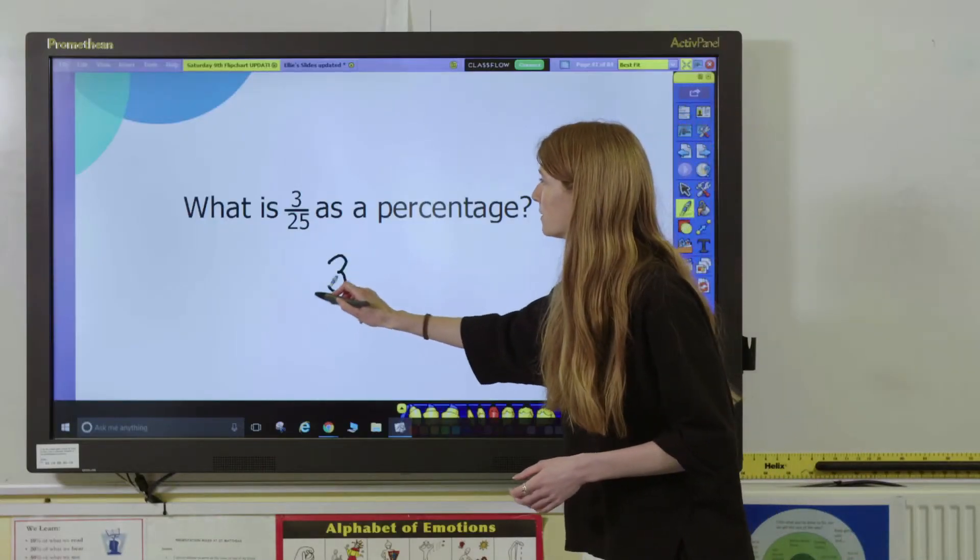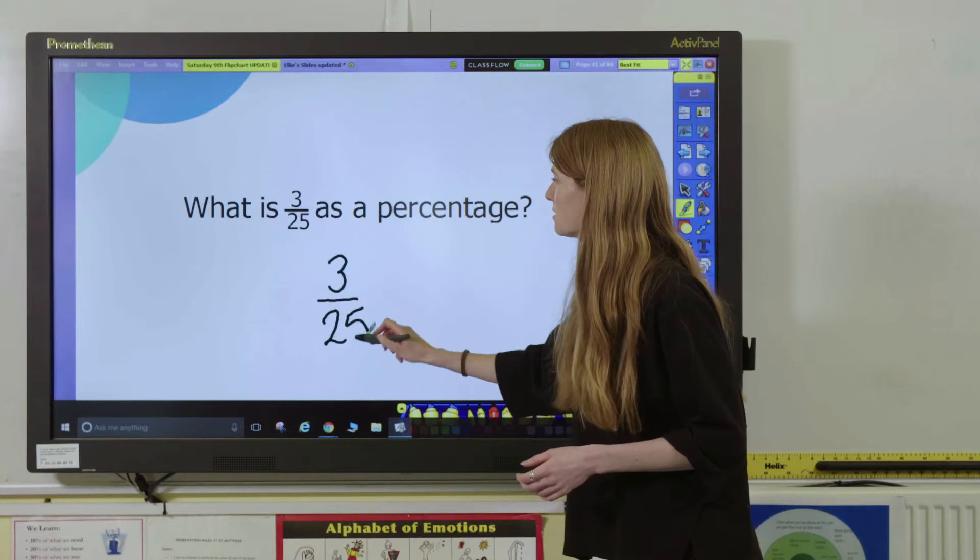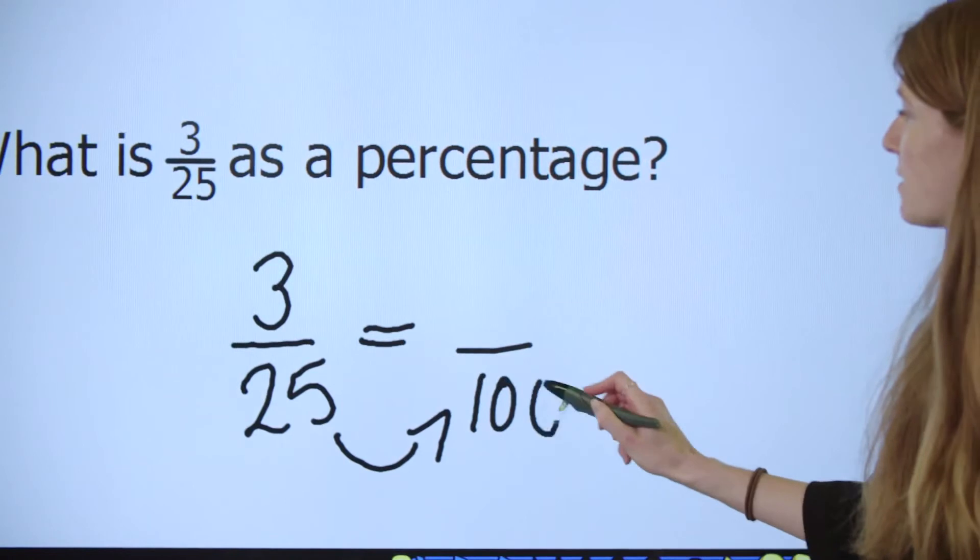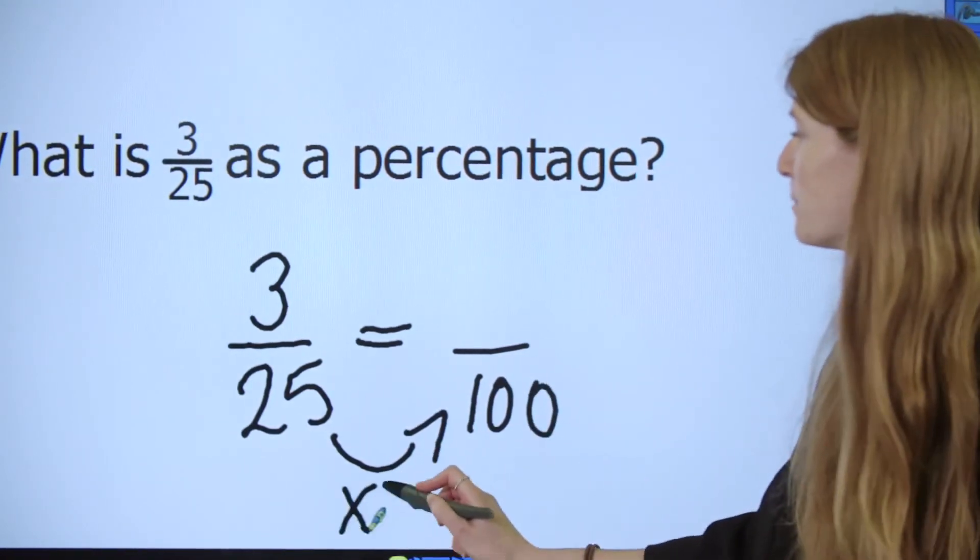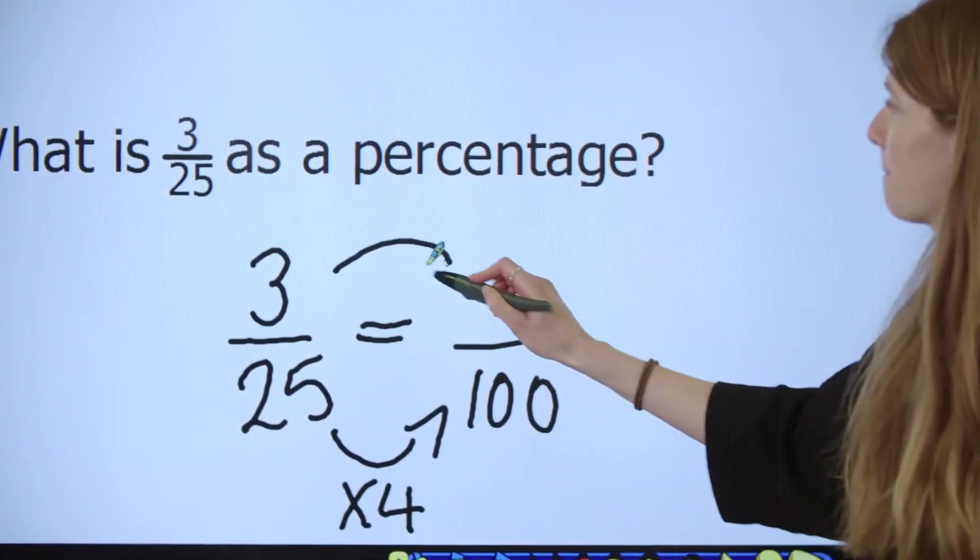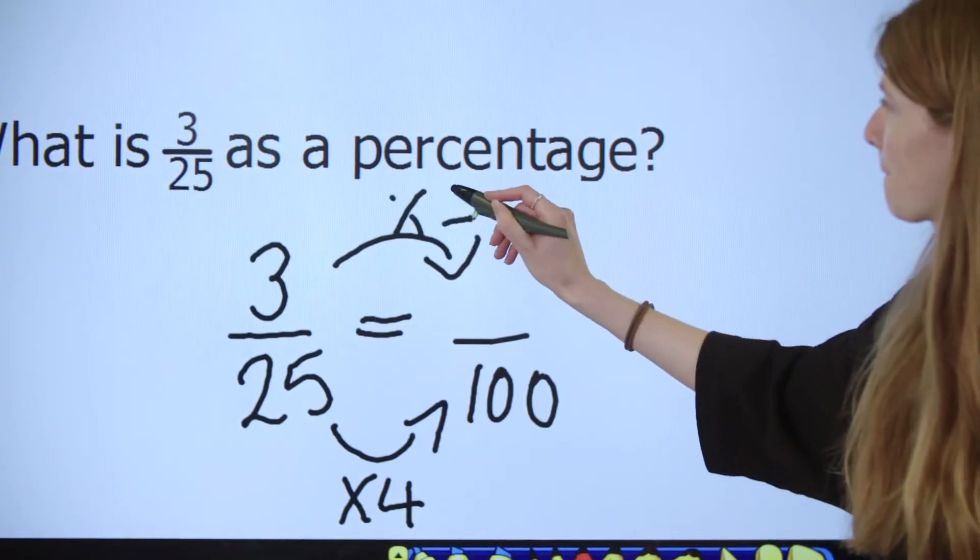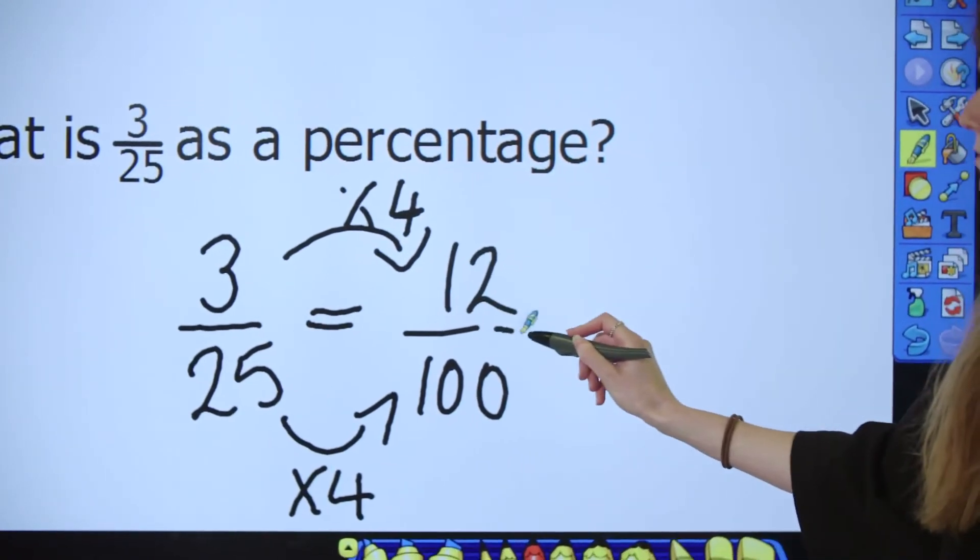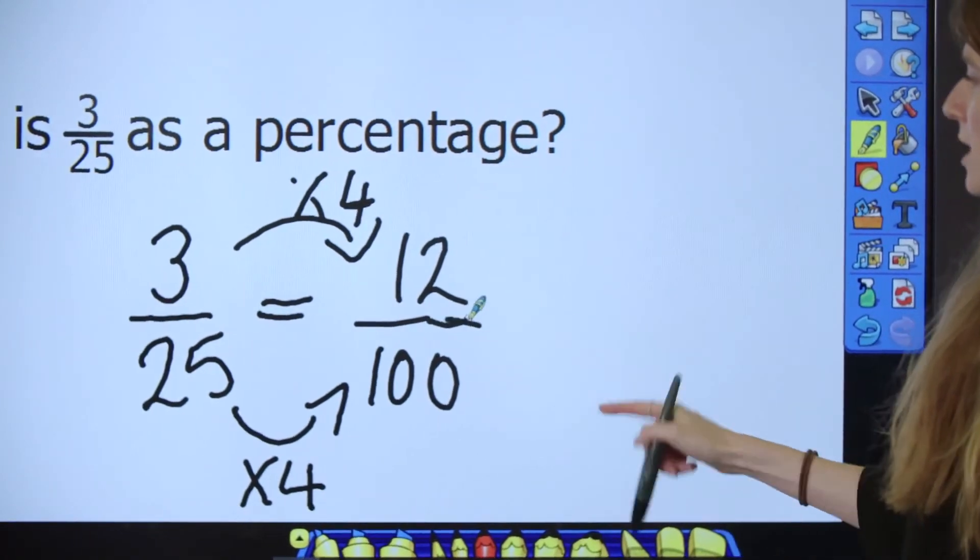So, using our knowledge of equivalent fractions, we know that in order to make 25ths to hundredths, we need to multiply by 4. So, we're going to get 12 hundredths.